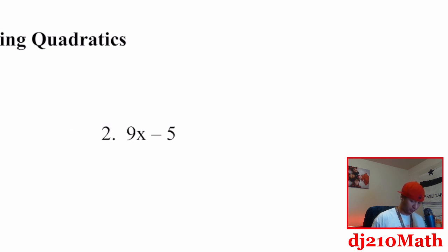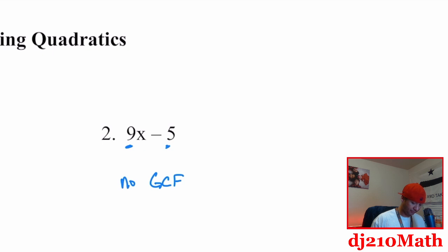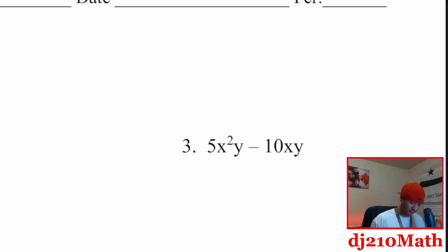Number two. There's no number that goes into nine and five. There's no X. So there is no GCF. There's only one variable, nothing common to nine and five, and there's no such thing as factoring out a one — that doesn't make sense.